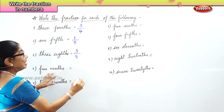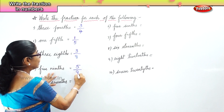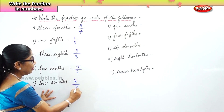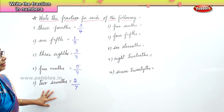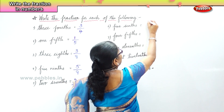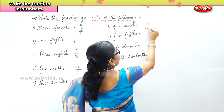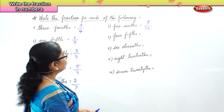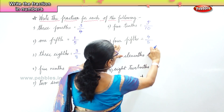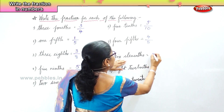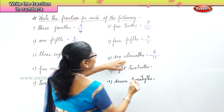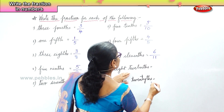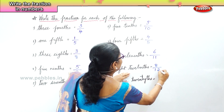Five-ninths — five parts out of nine parts. Two-sevenths — two parts out of seven parts. Five-tenths — five parts out of ten parts. Four-fifths — four parts out of five parts. Six-elevenths — six divided into eleven portions, six by eleven. Eight-twelfths — eight parts divided into twelve parts.